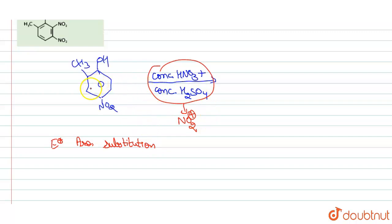In electrophilic aromatic substitution, the incoming electrophile NO₂⁺ will attack the carbon on the benzene ring at a position decided by the groups attached. The groups attached are OH, CS₃, and NO₂. Activating groups increase electron density and are ortho-para directing, and they decide the position of the incoming electrophile.